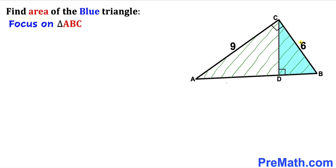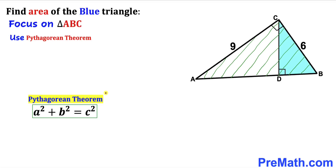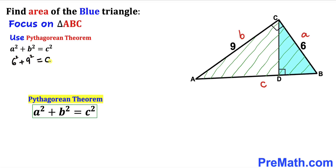Let's focus on this big right triangle ABC whose side lengths are six and nine units. Since this is our 90-degree angle, we are going to use the Pythagorean theorem: A² + B² = C². Let me go ahead and call this side A, this side B, and the longest side C. So let's fill in the blanks: 6² + 9² = C².